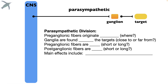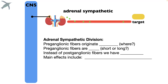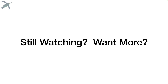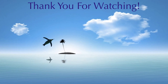Quiz yourself on what you remember about the parasympathetic division, the sympathetic division, and the adrenal sympathetic division. If you want more, I recommend a follow-up video that goes into all of the neurocrines and receptors for all of these pathways. I hope that was helpful — thank you for visiting the Penguin Prof channel, please show some support below, and I'll see you in the next one. Good luck.